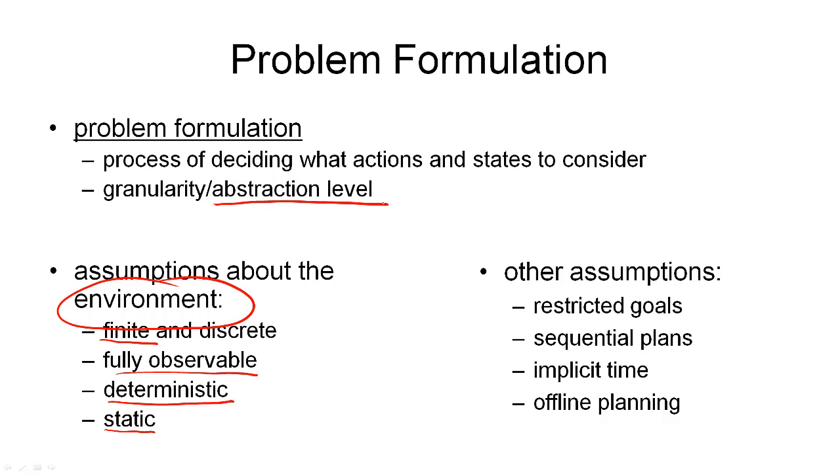But we will also make some other assumptions that are useful for planning. The first one is that we have restricted goals, and that means that our goals are either given to us as a single state that we want to be in, or a set of states that are all goal states. The second assumption is that the solution we are looking for is a sequential plan. So a solution is a linear list of actions. There's no parallel activity in our plans.